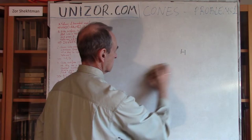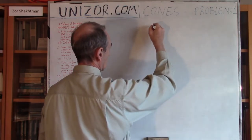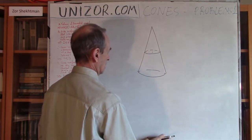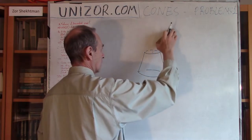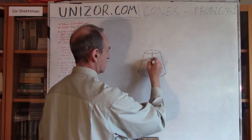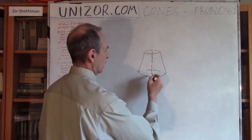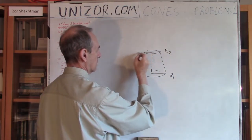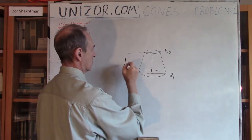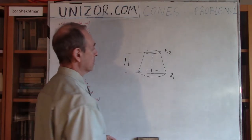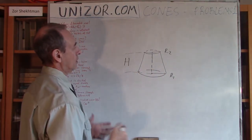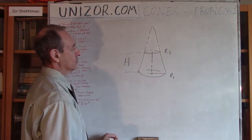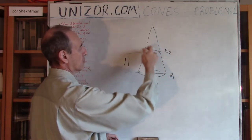Now, if I replace the original cone with a truncated cone, the obvious problem is to evaluate its volume in terms of two radii R1 and R2, and the height H. We need the formula for volume in terms of R1, R2, and H. We will calculate the volume of the truncated cone as the difference between the volume of the big cone and the volume of the small cone on top.